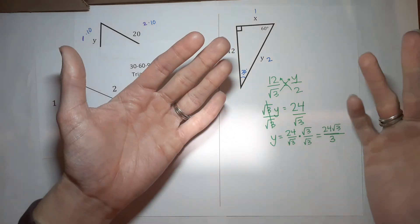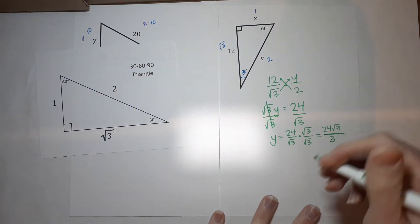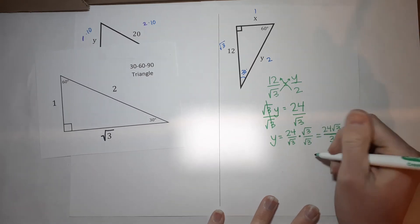So we're over a 1, which we don't really need to write. 3 goes into, sorry, 24 8 times. So I am left with 8 square roots of 3.